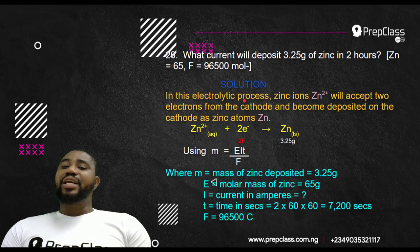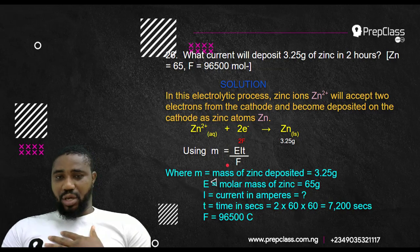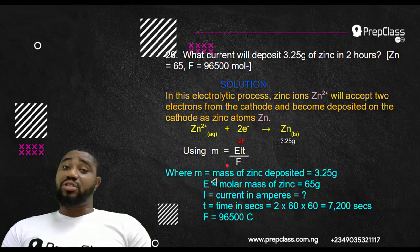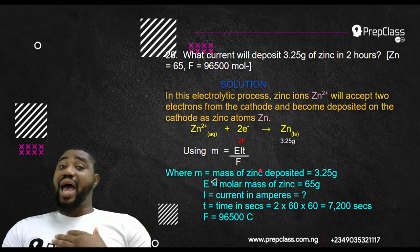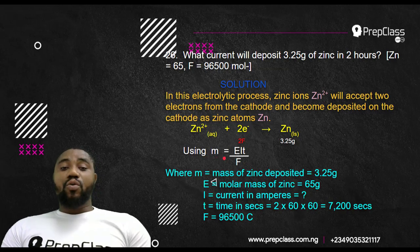There is this formula I like using. In short, I invented that formula. That formula is ascribed to me and only me. If you check any text, you won't see that formula. It is only in this lesson you'll see this formula. I'm serious. This formula states that M equals EIT over Faraday.